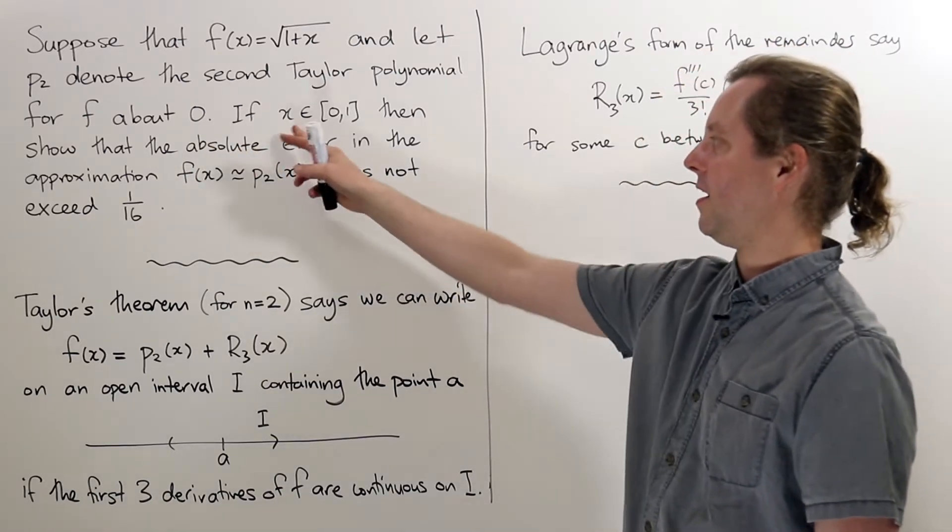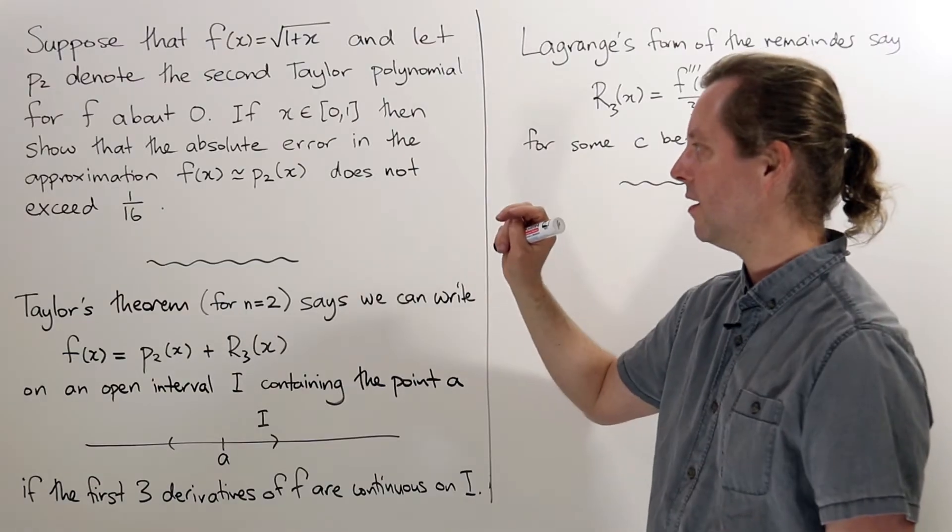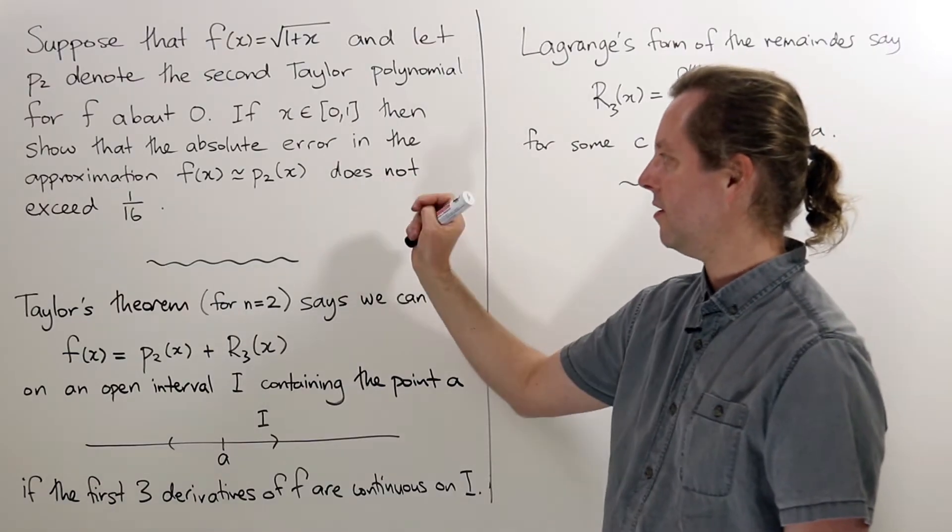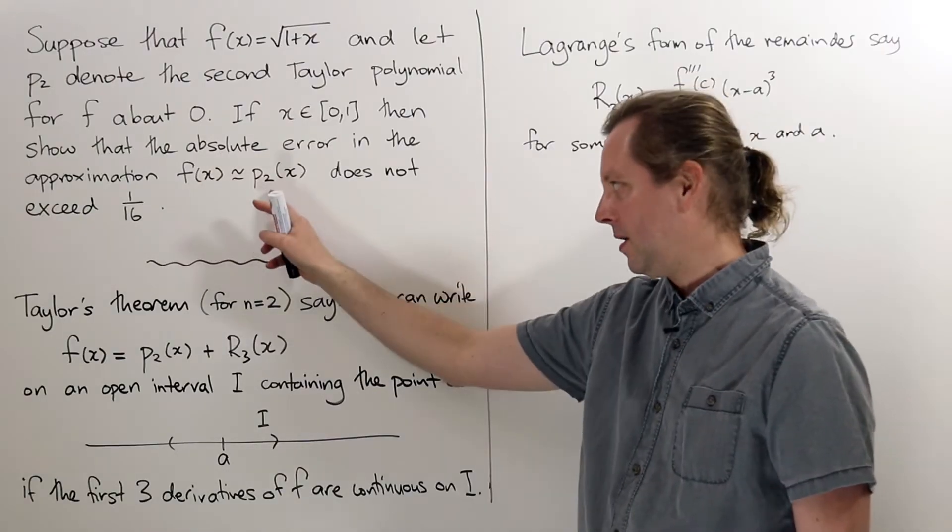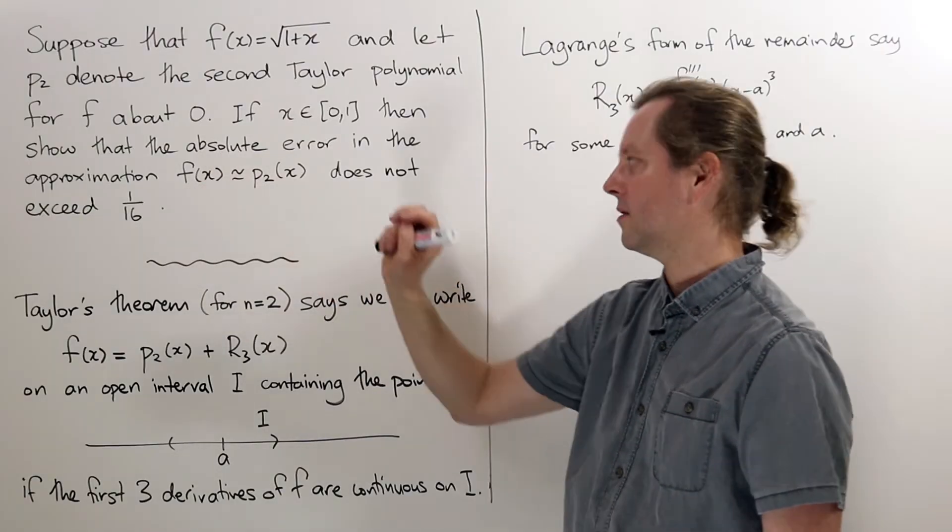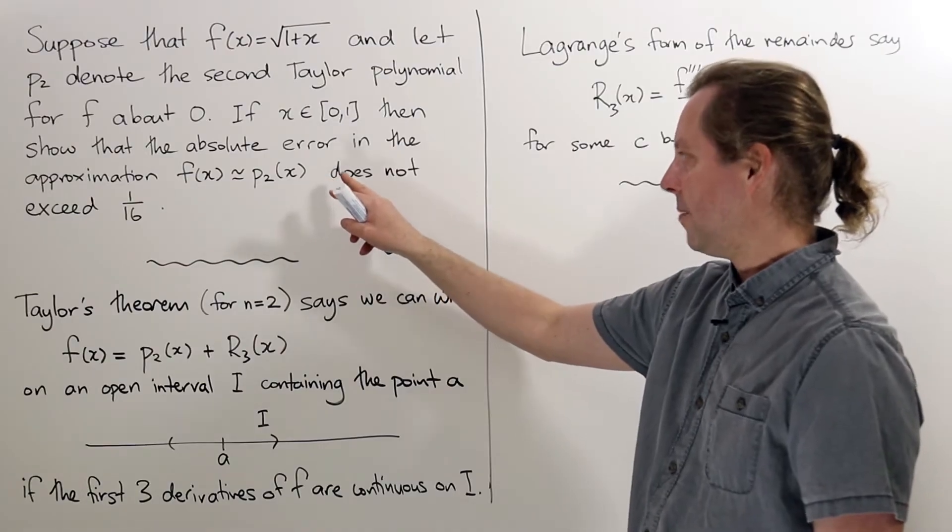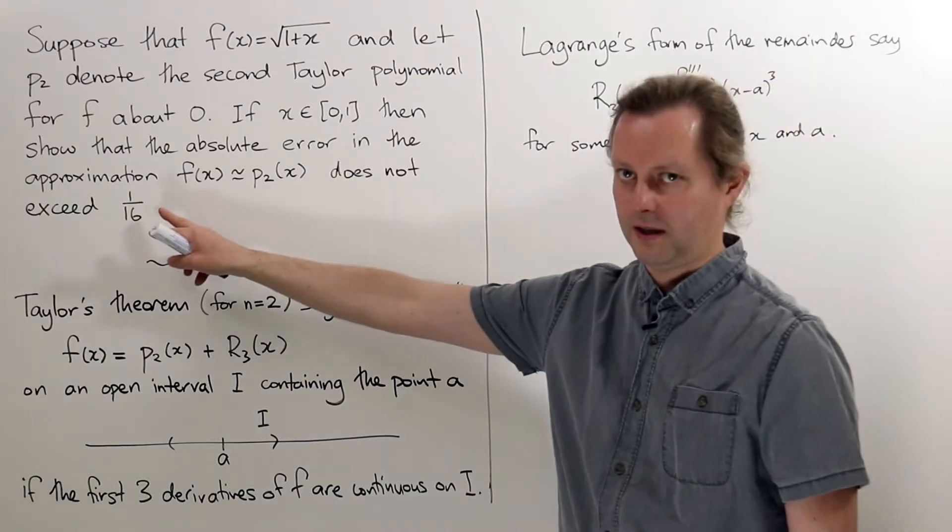Now we're saying that if x is in the interval from 0 to 1, we want to show that the absolute error in the approximation where we consider p2 to be approximating f(x), we want to show that the absolute error does not exceed 1/16.